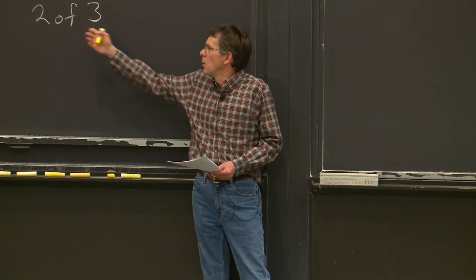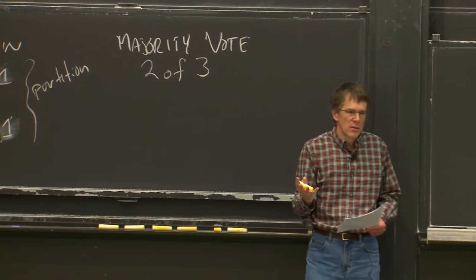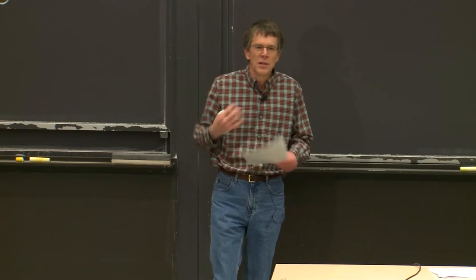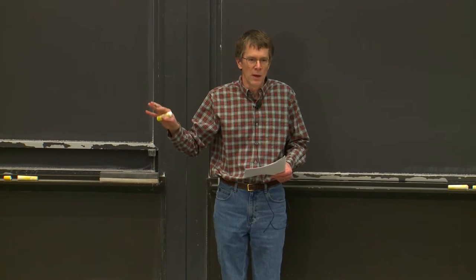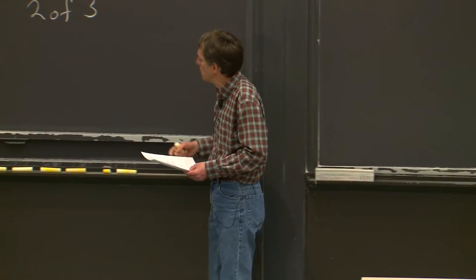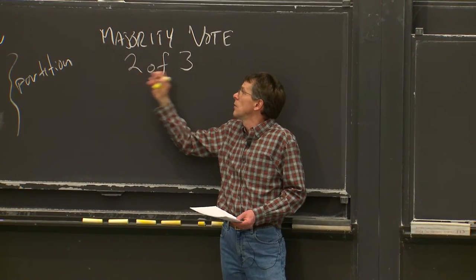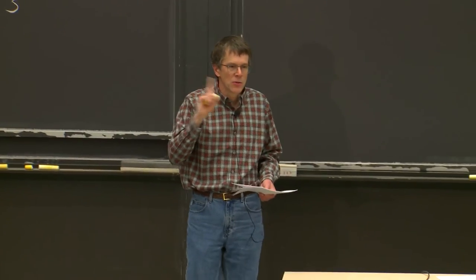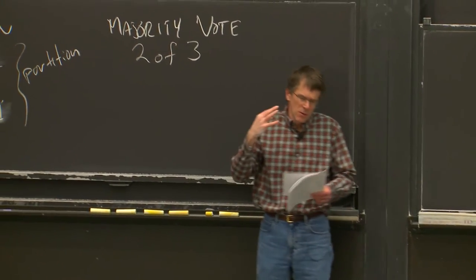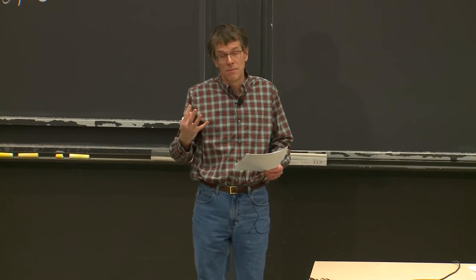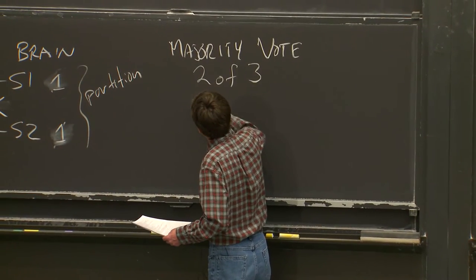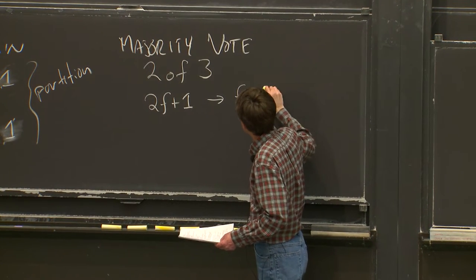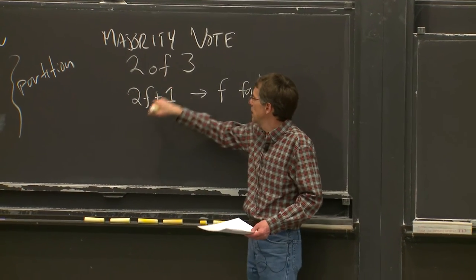One reason this works is that if there's a partition, there can't be more than one partition with a majority of servers in it. A partition can have one server — not a majority — or two, but then the other partition has only one server and can't make progress. When talking about a majority, it's always out of all servers, not just the live ones. In a system with three servers, you always need two out of three, even if one has failed.